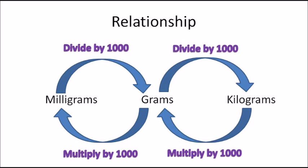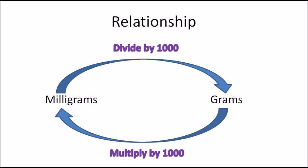Now let's look at milligrams and grams. If you have a weight in milligrams and need to convert it to grams, you divide by 1000. If your measurement is in grams and you need to convert it to milligrams, you multiply by 1000. Remember: 1000 milligrams makes one gram, and one gram makes 1000 milligrams.